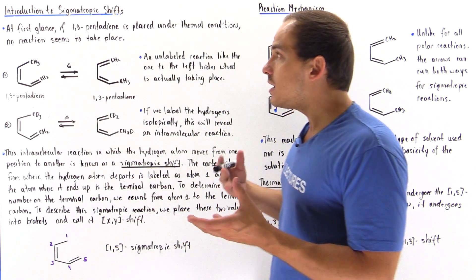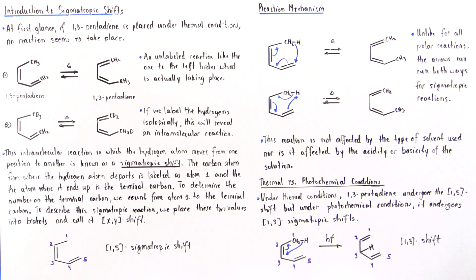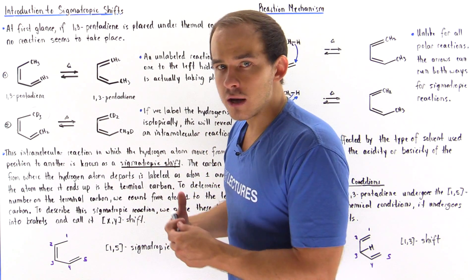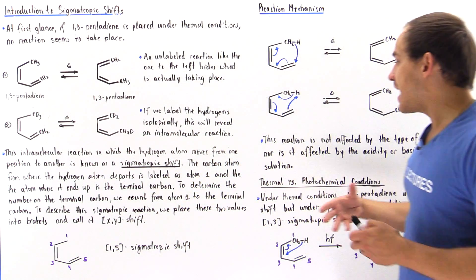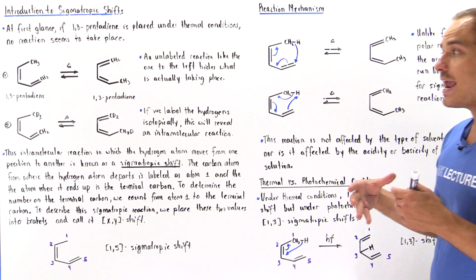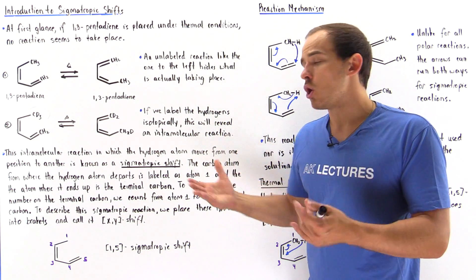Now, something that does affect the type of sigmatropic reaction that takes place is the conditions under which the energy comes from. So if we use a thermal reaction or a photochemical reaction, if we change the source of energy, the sigmatropic shift will also change.